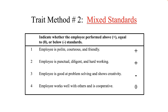The second of four trait methods is the mixed standard scale, which is based on a comparison with some predetermined standard. The incumbent is rated using responses like better than, equal to, or worse than the standard. For better than, the incumbent gets a plus; for equal to, a check or zero; and for worse than, a minus. In this example, this employee scores better than on two items, equal to on one item, and worse than the standard on another item.